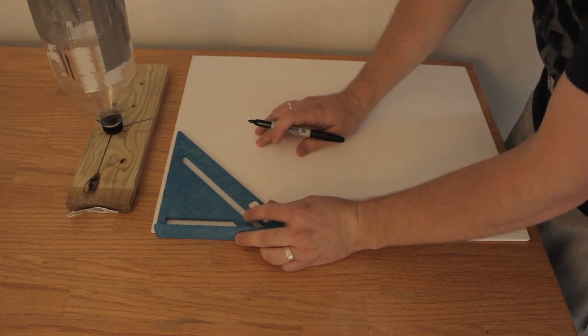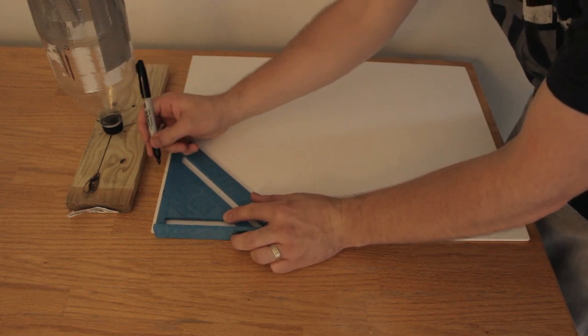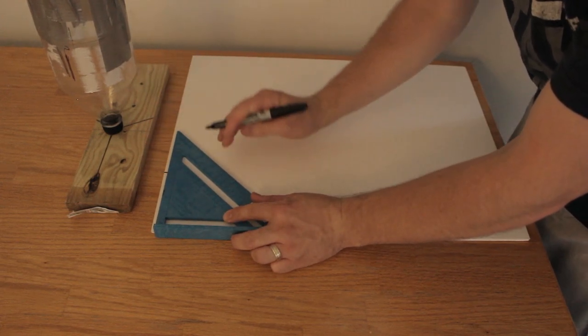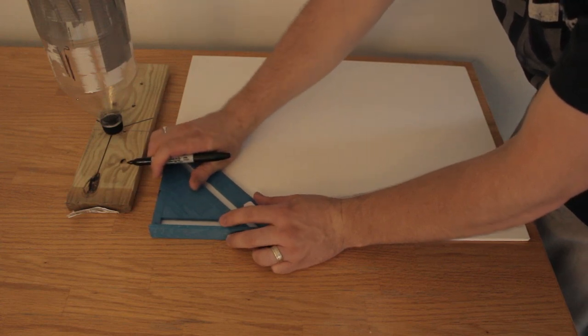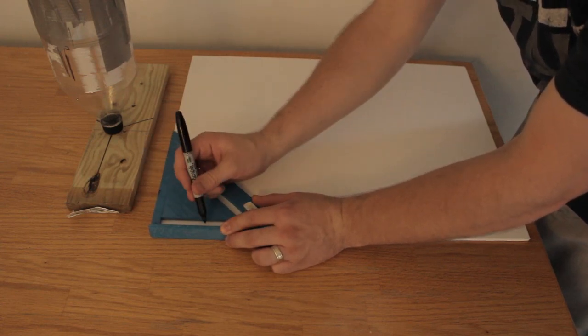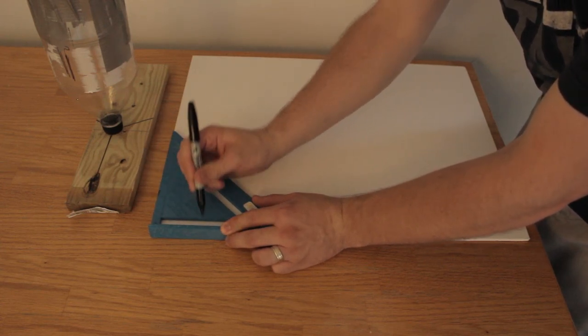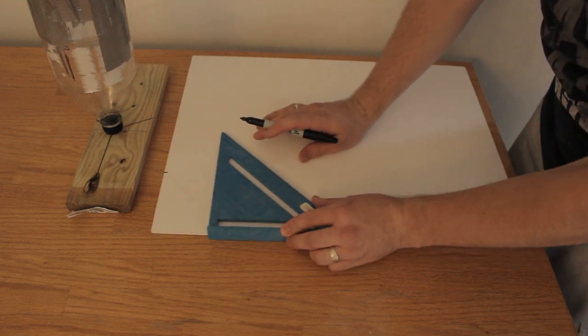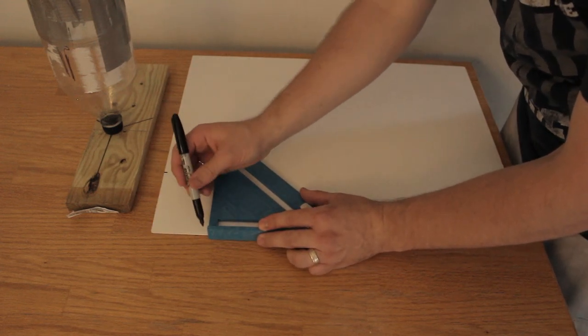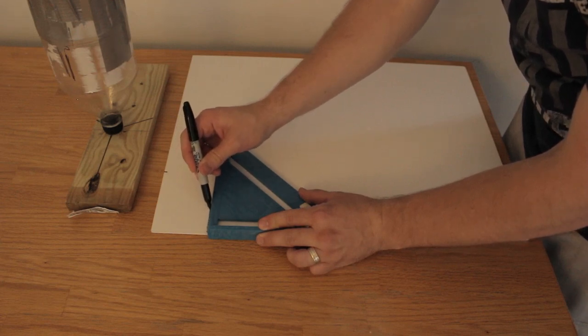So what I'm going to do with my carpenter's square once again, I'm going to measure that four inch mark. Then make sure I'm right on this edge over here and put my three inch line here and make sure I'm nice and square with that three inch line. Now I'm just going to draw a reference line.